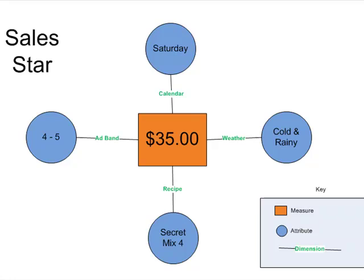For my thirty-five dollars, what I know is this occurred on Saturday. I sold thirty-five dollars on Saturday. It was a cold and rainy day. I used the secret mix for recipe. And I had an ad band four to five, which means I spent somewhere between four and five dollars on advertising.